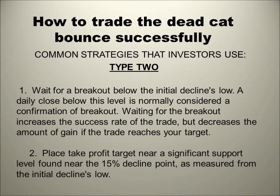Here's the second strategy type. First, you can wait for the breakout below the initial decline's low — a daily close below this level would normally be considered a confirmation of the breakout. Waiting for the breakout increases the success rate of the trade, but decreases the amount of gain if the trade reaches your target. Second, we can place a take profit target near a significant support level found near the 15% decline point as measured from the initial decline's low. For Type 2, we want to use our Fibonacci retracements, which are provided on your trading platform to help determine how steep the bearish trend is, how strong that bounce is, and where to open and where to take profits.